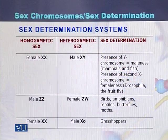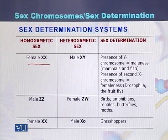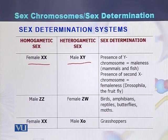There are three most common sex determination systems. The first example is humans, where the female is XX and the male is XY. The second system is found in birds, amphibians, and reptiles.